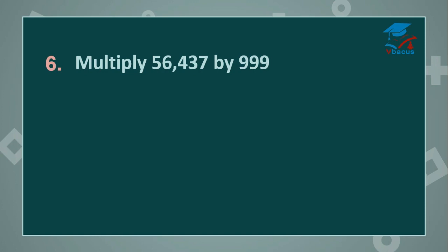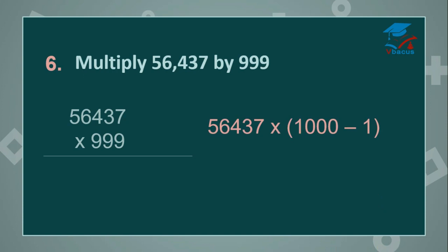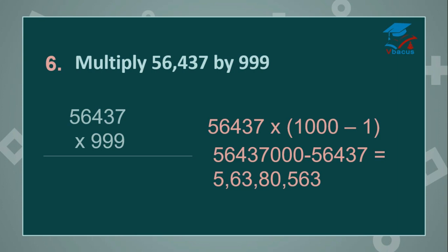Let us go to the next sum: multiply 56,437 by 999. Here also the multiplier has fewer digits than the multiplicand. 999 is near base 1000, so 999 can be written as 1000 minus 1. Multiply 56,437 by 1000 first, then subtract 56,437 once. When you subtract, this will become 56,380,563. So this is your final answer.